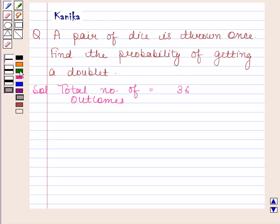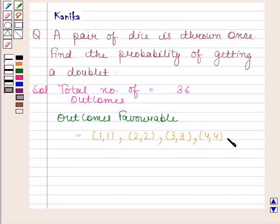We have to find the probability of getting a doublet. Now outcomes favorable to this event are 1-1, 2-2, 3-3, 4-4, 5-5 and 6-6.